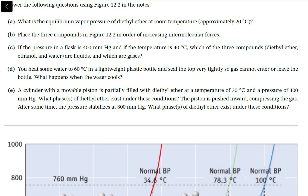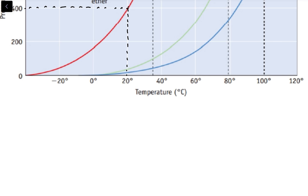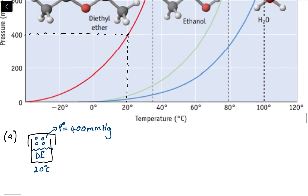What is the equilibrium vapor pressure of diethyl ether at room temperature, approximately 20 degrees Celsius? Diethyl ether is the red curve, and at 20 degrees Celsius we draw a line up and read off the vapor pressure. To remind ourselves what this physically means: if we have a closed container containing some diethyl ether, then at 20 degrees Celsius the gas phase of the diethyl ether will have a pressure of 400 millimeter mercury. So the vapor pressure is 400 millimeter mercury.